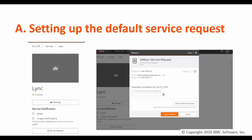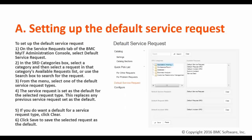When a user opens the service and clicks on service request, this default service request can be submitted. To configure the default service request, go to the default service request section, select the SRD, associate them to their respective defaults, and save the changes.